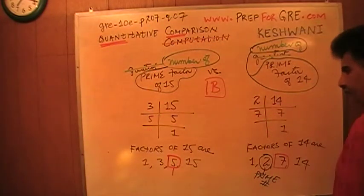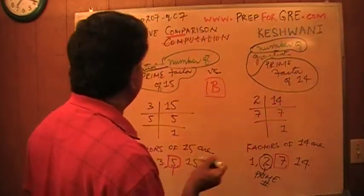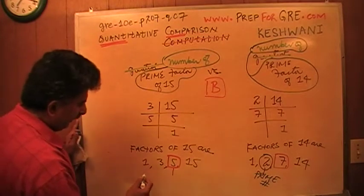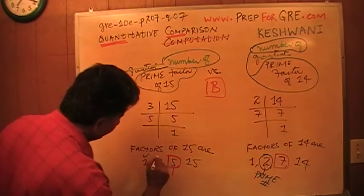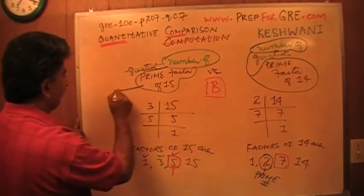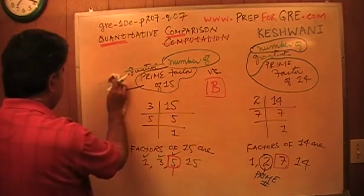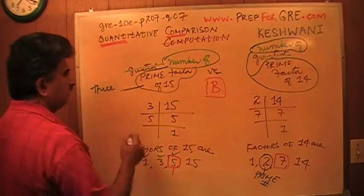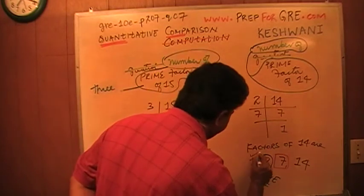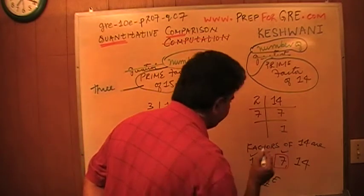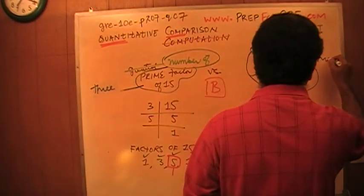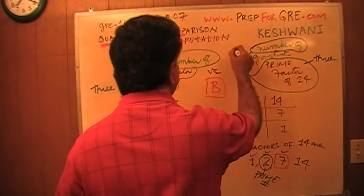Since the question is asking for the number of prime factors of 15, how many prime factors do you see? From our list — 1, 3, 5, 15 — 3 is a prime number, 5 is a prime number. There are 2 prime factors of 15. And how many prime factors of 14? Well, 2 is a prime number and 7 is a prime number. So there are 2 prime factors of 14 as well. Therefore, for this new problem, the answer is C.